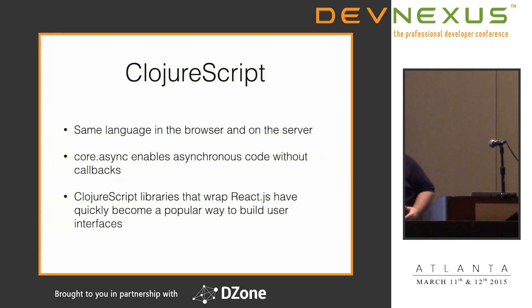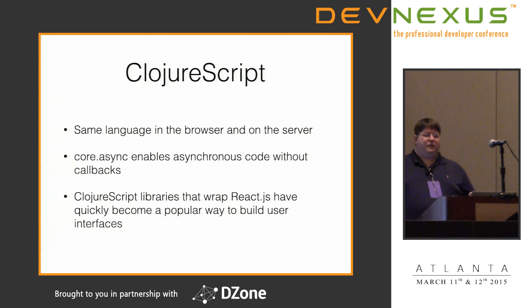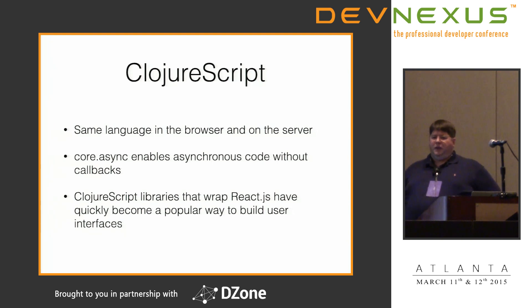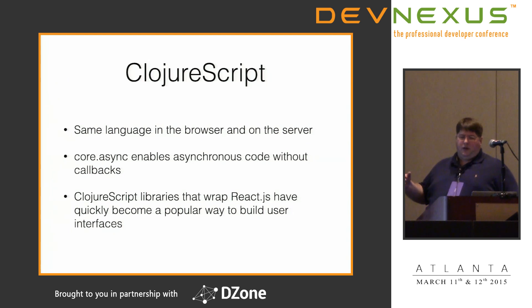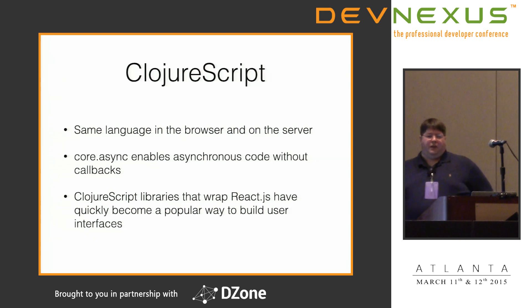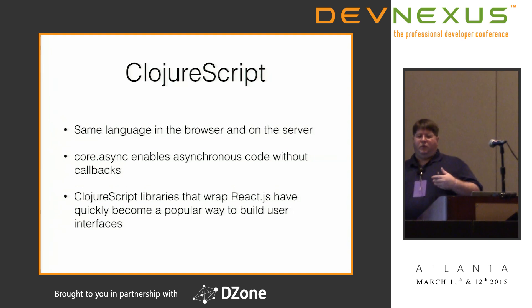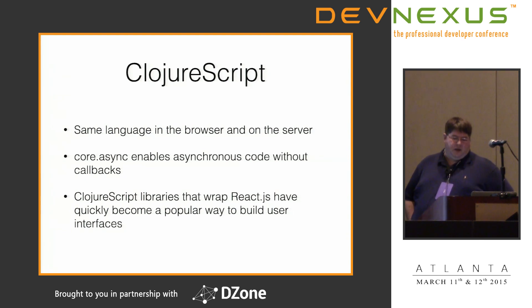ClojureScript is a neat idea, introduced about four years ago — a version of Clojure that compiles to JavaScript. When it first came out, it was a little painful to use because the interop is more complicated in JavaScript, and there was no real value proposition — nobody was going to choose it as a first language. You basically had to be a Clojure junkie who wanted to try it.